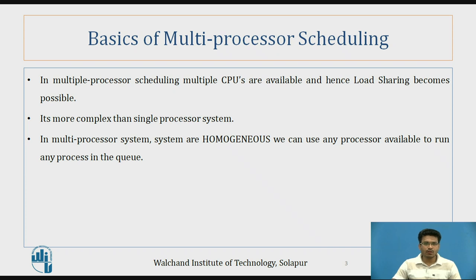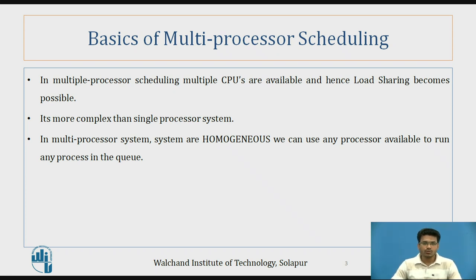Now let's see the basics of Multi-Processor Scheduling. It is Multiple Processor Scheduling, meaning in our single CPU we will have multiple processors for execution purposes. When n number of processors come for execution on a single processor, that processor will get a heavy load, and while executing all these processes, the throughput of that processor will be very poor.